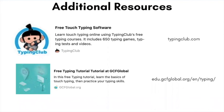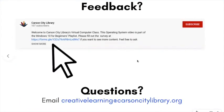Learning how to type takes practice — do not get frustrated with yourself. It's harder to learn how to type when you switch from one device to another, like switching from the touch screen on your phone to the keyboard on your computer. Although the library doesn't have keyboarding books, we recommend using free websites to practice: Typingclub.com has typing games, and my favorite is GCF Global, which offers a free typing tutorial. If you have questions, feel free to email creativelearning@CarsonCityLibrary.org, and please fill out the survey in the video description to let us know how else we can help you. Thank you so much for watching. Stay strong, Carson City. Bye!